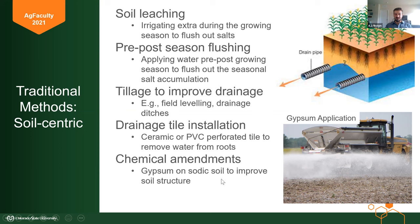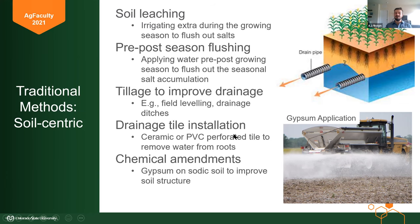Finally, chemical amendments. If we have a sodic soil with sodium chloride, one of the ways to fix that is to actually apply another salt — gypsum — to fix it. Because gypsum is a two-plus charge with calcium, it's actually a stronger attraction to soil than sodium with its one-plus charge. If we apply gypsum and integrate it into the sodic soil, the calcium will replace the sodium, freeing it up to be leached. The gypsum replaces the sodium and actually improves the soil structure. Then you can begin your leaching regimen to get everything out of the soil and get it healthy again.